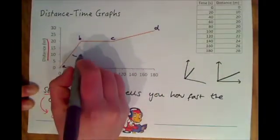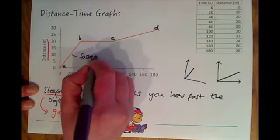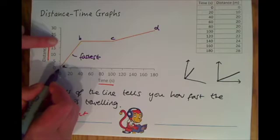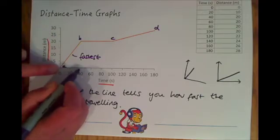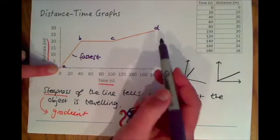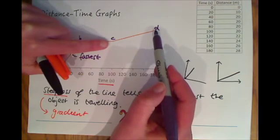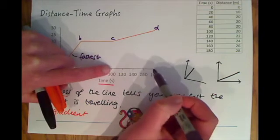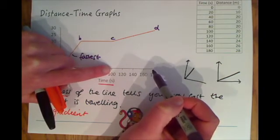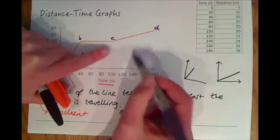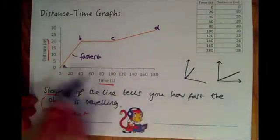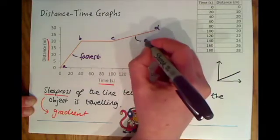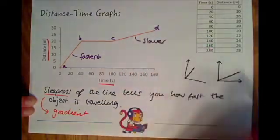This is where it's travelling the fastest because if we have a look at the numbers it's travelled 20 meters in 40 seconds. If we compare this to this part here the c and d where it's travelled just 10 meters in 80 seconds approximately. So massive differences in how far it's travelled over time. If it's steeper it's faster and if it's got a shallower gradient it's slower over here.